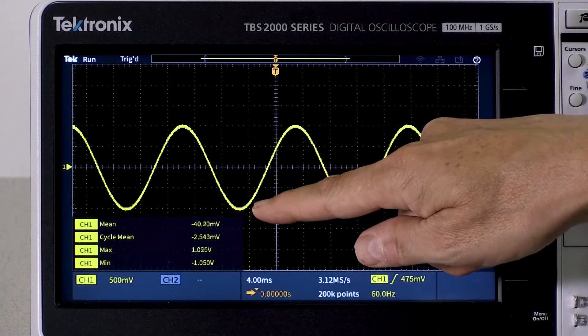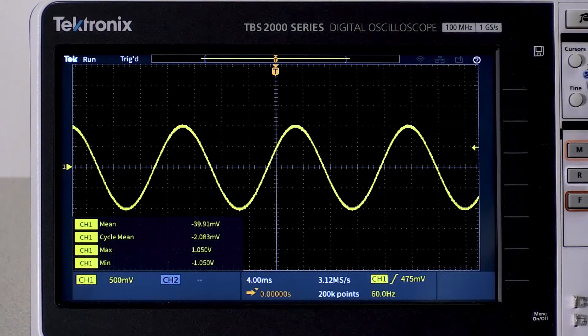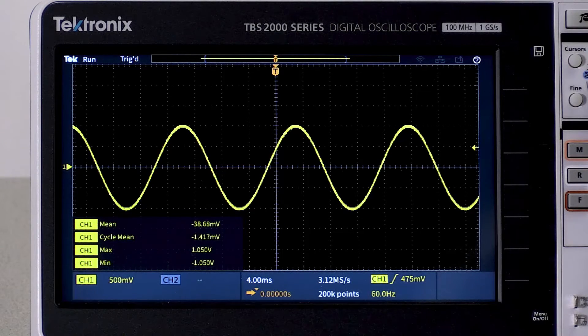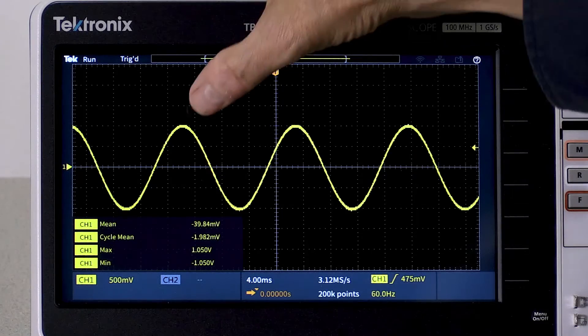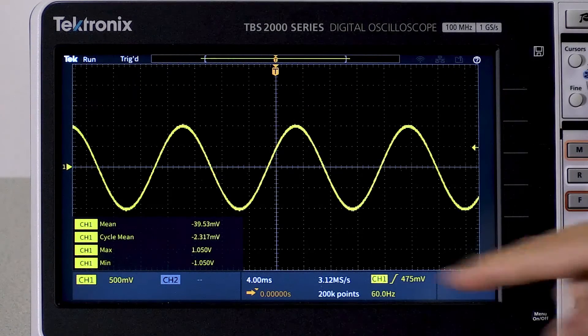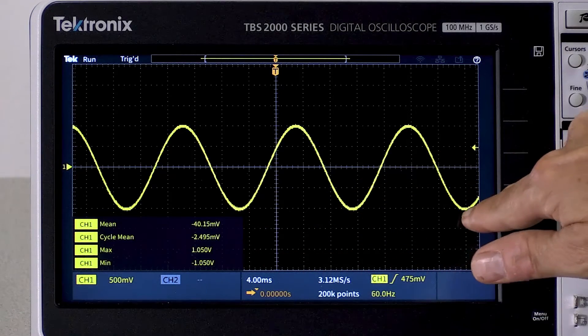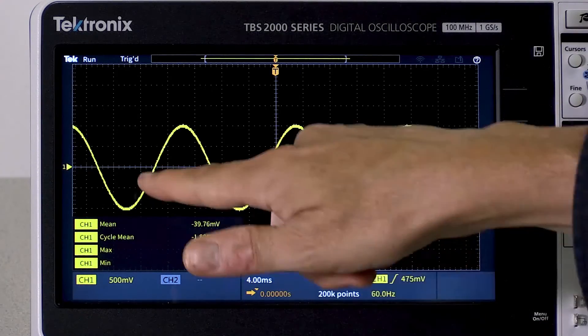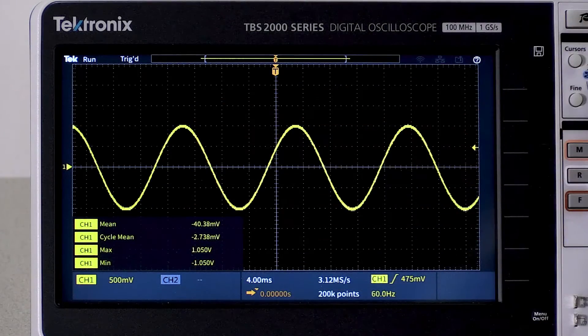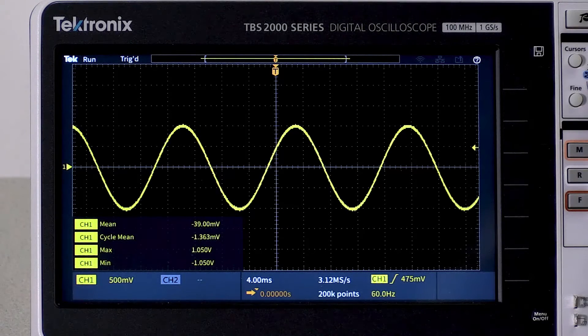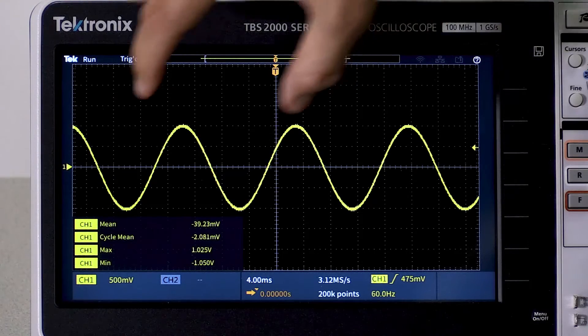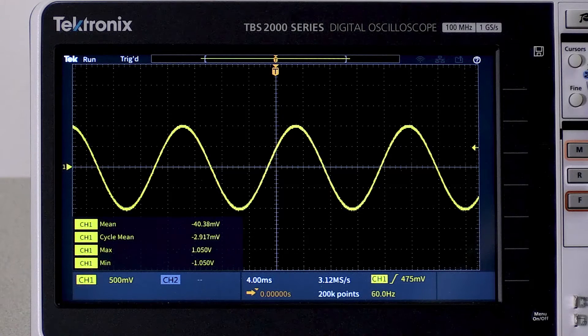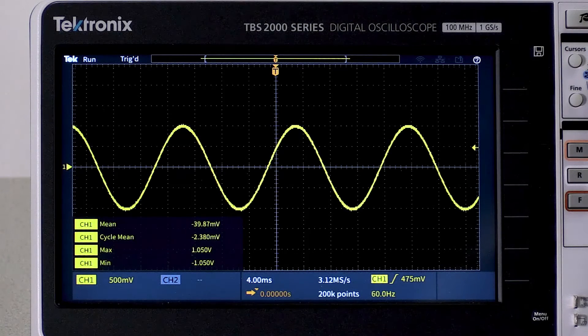The cycle mean is pretty close to zero volts, but the mean is negative. Why is that? Remember, the mean measurement is looking at all the points on the screen. We have about three and a half positive cycles, but we have about three and three quarters negative cycles. So the mean is negative because we have more negative cycles than positive cycles. The cycle mean measurement automatically finds the first cycle of the sine wave and performs the measurement over just that cycle. For a periodic signal like this one, cycle mean is a better choice.